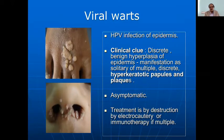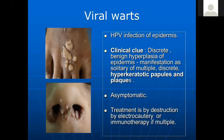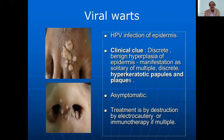Viral warts are HPV infection. The clinical clue is hyperkeratotic papules and plaques with a verrucous surface — they are usually asymptomatic. Treatment is by destruction: electrocautery, immunotherapy such as topical BCG application, or intralesional MMR vaccine injected into one lesion causes distant lesions to disappear. For multiple warts, oral retinoids and zinc for four to six weeks give results.